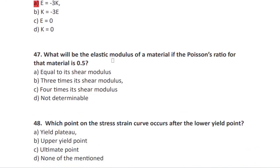Question 47: what will be the elastic modulus of a material if the Poisson's ratio is 0.5? The elastic modulus will be 3 times its shear modulus — E = 3G.